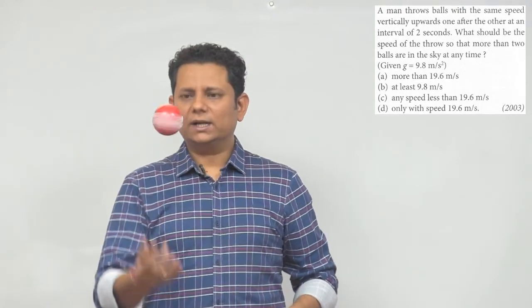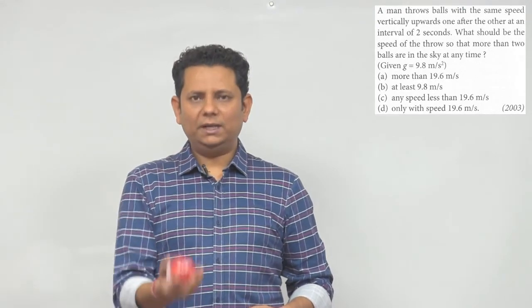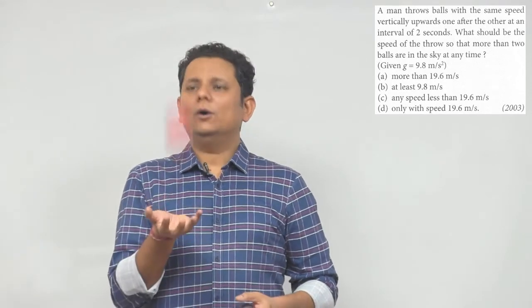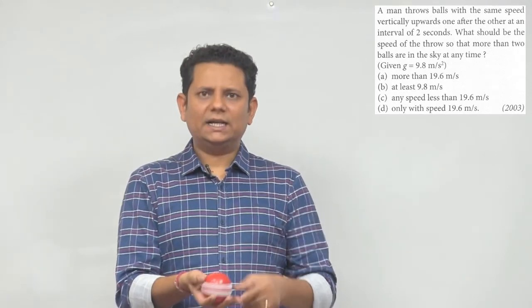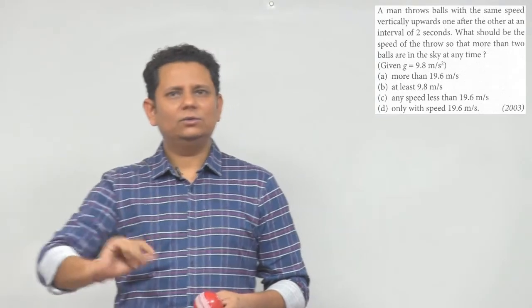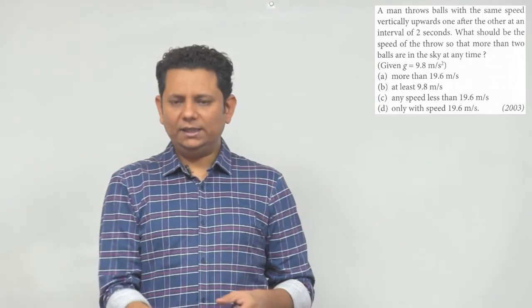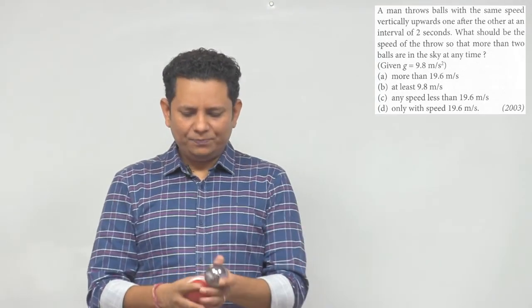If I throw only one ball, say I throw the ball upward, its time to go up and come back down is given by 2u/g. This is your time of flight formula.